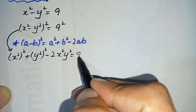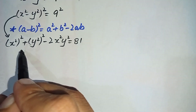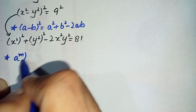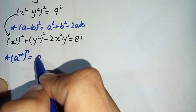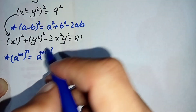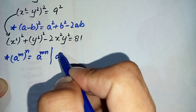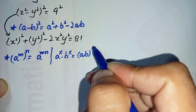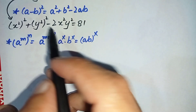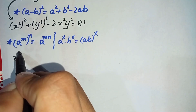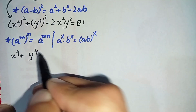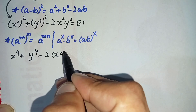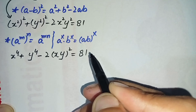...9 squared is 81, because 9 times 9 is 81. Again, in this equation we will use two exponential properties: the first is (a raised to power m) whole raised to power n equals a raised to power mn, and the second is a raised to power x multiplied by b raised to power x. By using these exponential properties, it will become x to the 4th plus y to the 4th minus 2 times, taking xy common, (xy) squared is equal to 81.